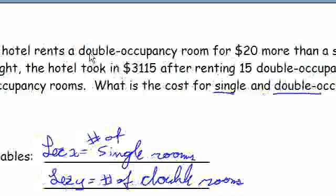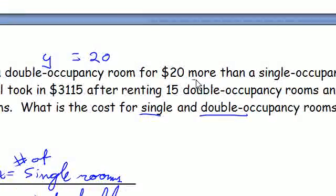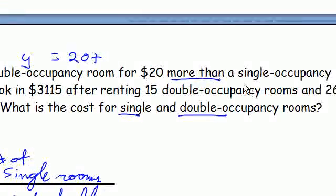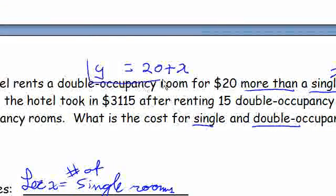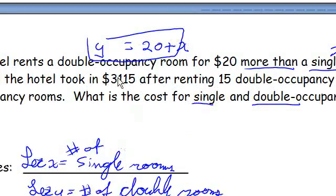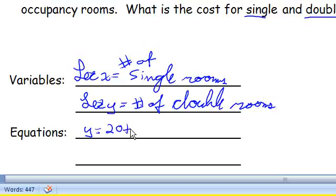So now let's set up our system. A hotel rents a double occupancy room, that's y, for $20 more than a single occupancy room, which is x. So there's our first system right here. Look at that lovely box. I'll rewrite it down here. Y equals 20 plus x.